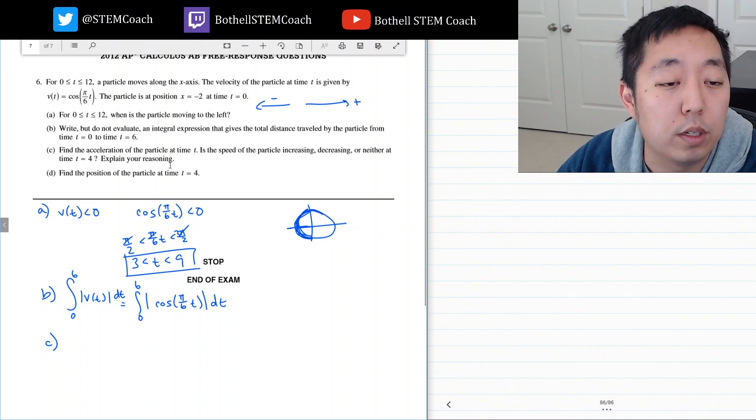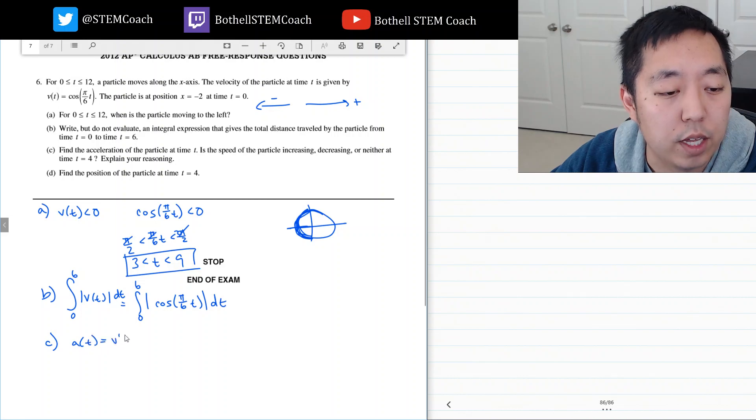Find the acceleration of the particle at time t. Is the speed of the particle increasing, decreasing or neither at t equals 4? Explain your reasoning. Acceleration is the derivative of velocity.